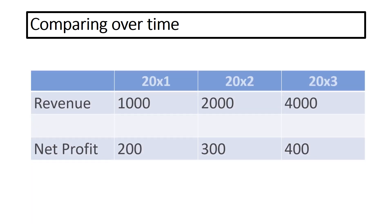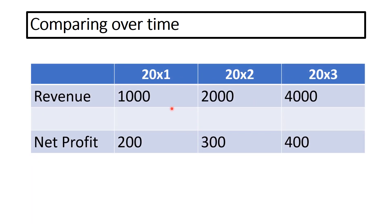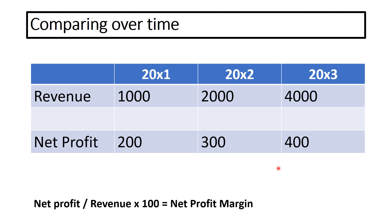We're now going to see how we can use the net profit margin to make comparisons over time. We have a table with three years' worth of information. Revenue is going up — £1,000, £2,000, £4,000 — doubling each year, which looks fabulous. Net profit is £200, £300, £400, doubling over two years — also looking really good. We're going to calculate the net profit margin by taking the net profit figure, dividing it by the revenue, and times it by 100.